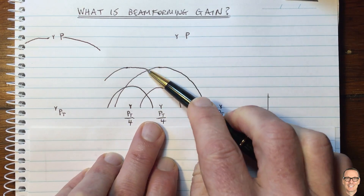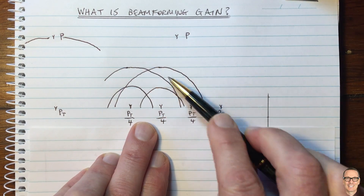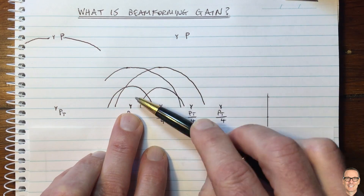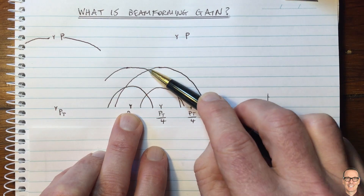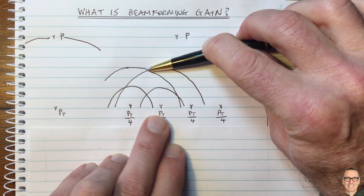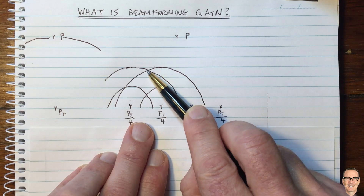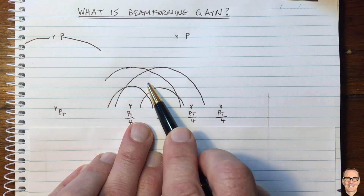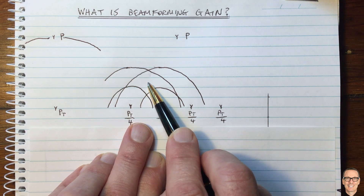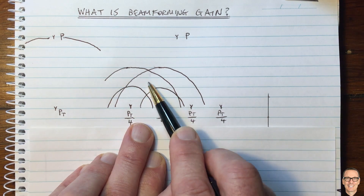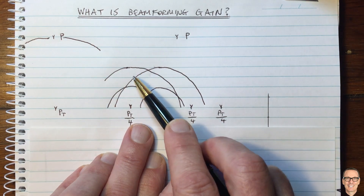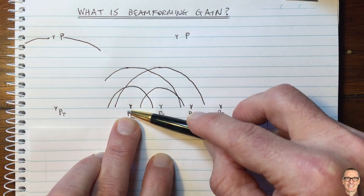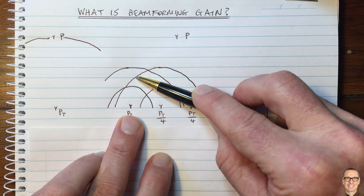Clearly, we're getting constructive and destructive interference at different locations. For example, here we've got a peak in the sinusoidal waveform from this antenna and a peak from this antenna. So at this location, at this instant of time, those two sinusoid components are adding constructively. In the middle, they're both at the negative peak, so they're also both adding in the negative direction. At this point here, we're getting a peak from this antenna but a trough from this antenna, so here they're adding destructively.